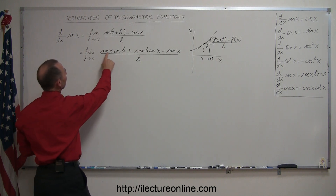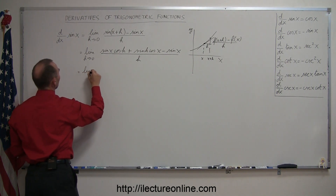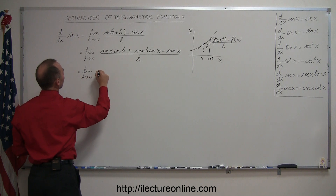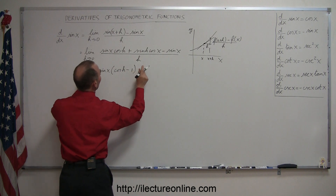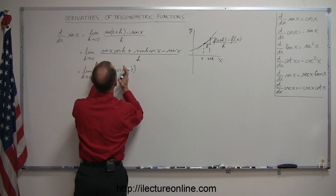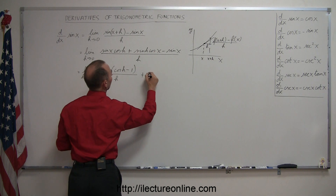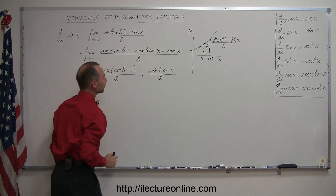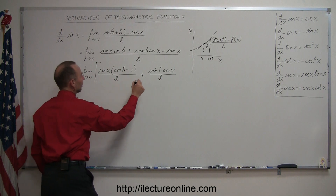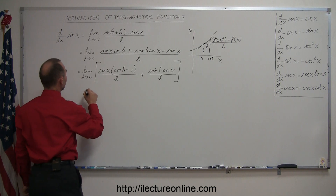We have a sine of x in this term and a sine of x in that term, so I'm going to factor out a sine of x. This is equal to the limit as h approaches zero of the sine of x times the quantity cosine of h minus 1, all divided by h, plus the sine of h times the cosine of x divided by h. I need to put brackets around this because taking the limit applies to the whole expression.